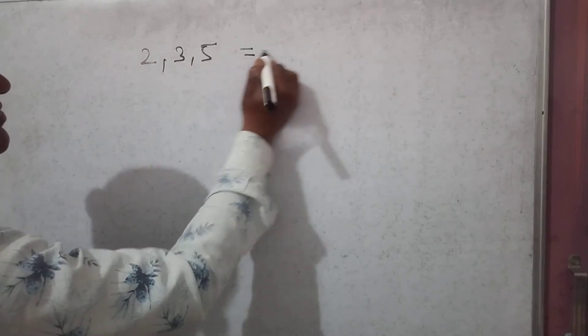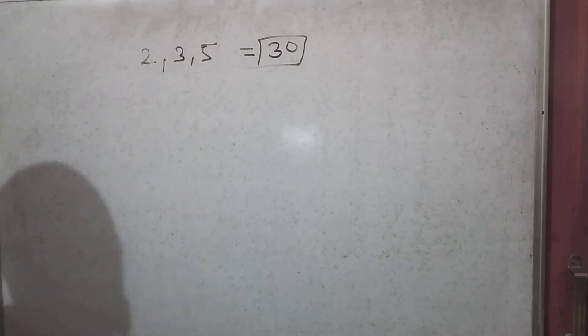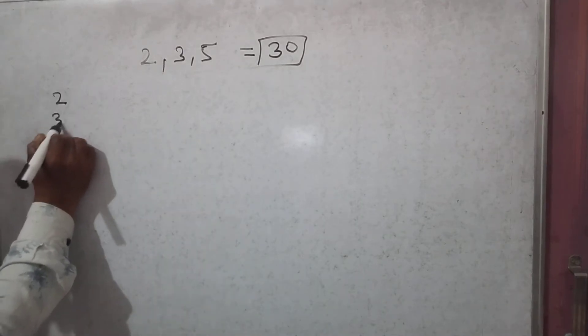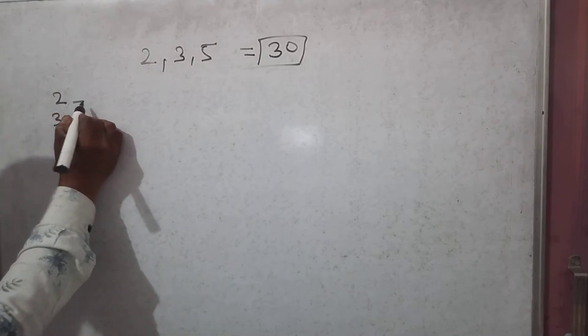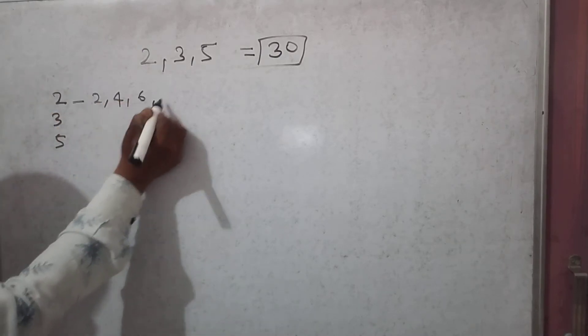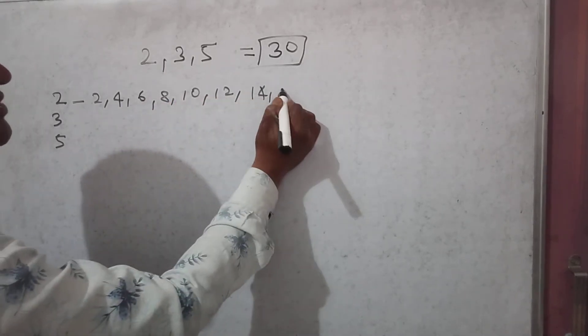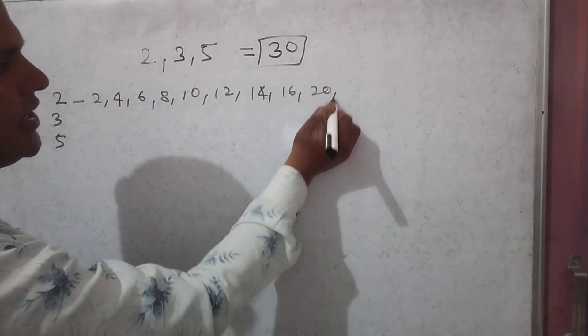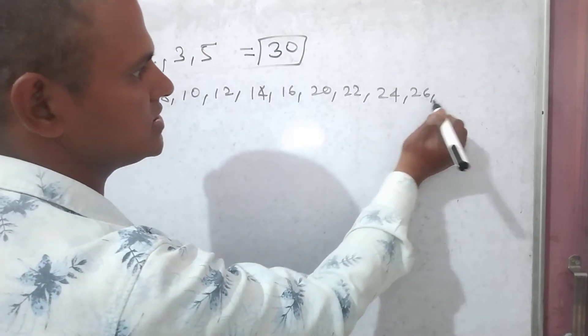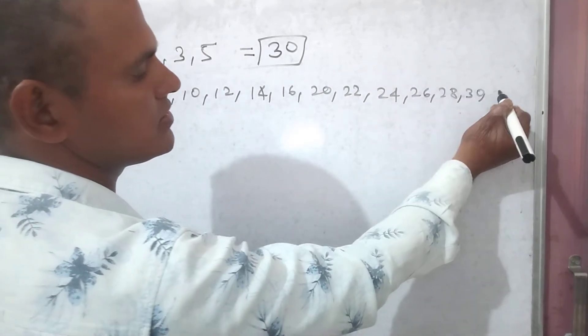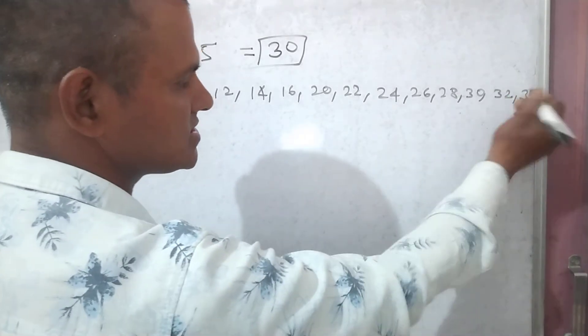2, 3, 5. What is LCM? Multiples of 2 are: 2, 4, 6, 8, 10, 12, 14, 16, 20, 22, 24, 26, 28, 30, 32, 34, 36, and so on.